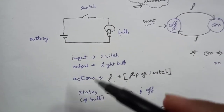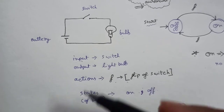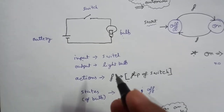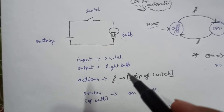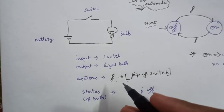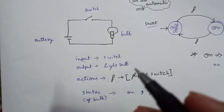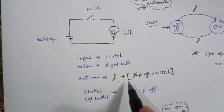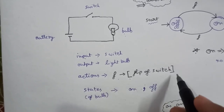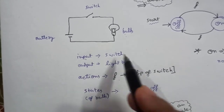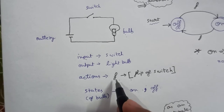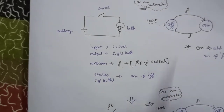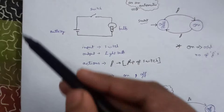There is only one action we can perform in this whole automata: the flip of the switch. We can flip the switch either way — from on to off or off to on — but the action is the same, that is flip the switch. We will denote the flip of the switch as 'f'.